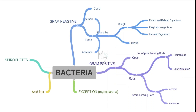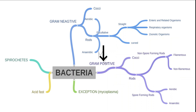Before talking about Vibrio vulnificus in detail, we should know bacterial classification. Bacteria are classified into spirochetes, acid-fast bacteria based on acid-fast staining, and there's an exception — the Mycoplasma bacterium. Bacteria are also classified on the basis of gram staining into gram-positive — we are done with all of them; be sure to check out the channel — and also into gram-negative.